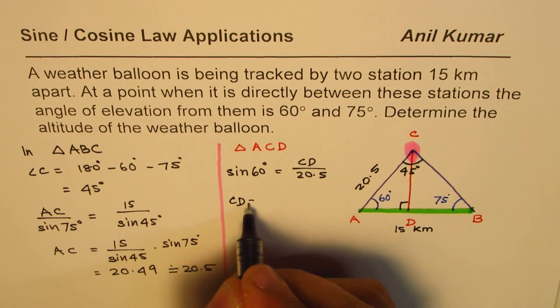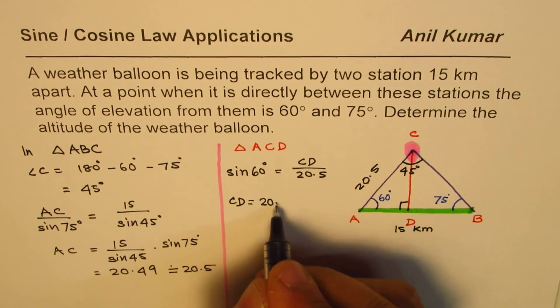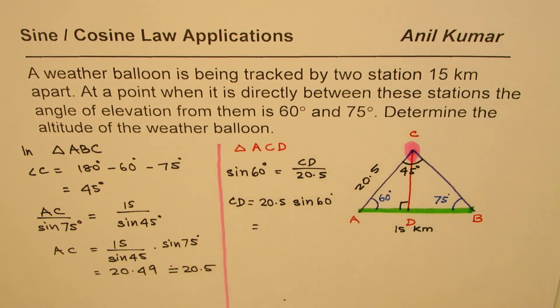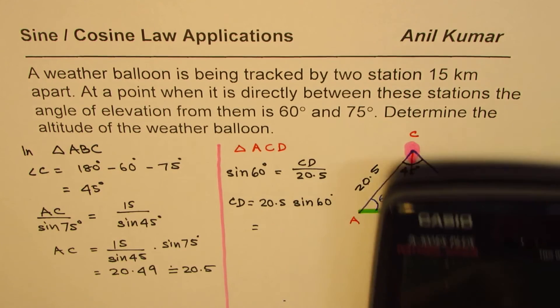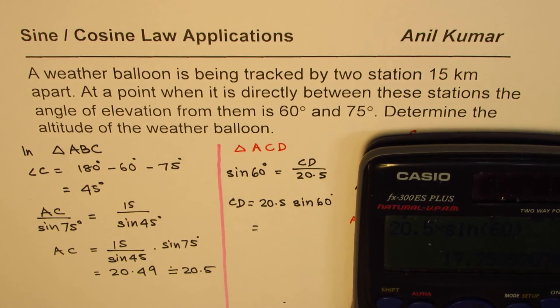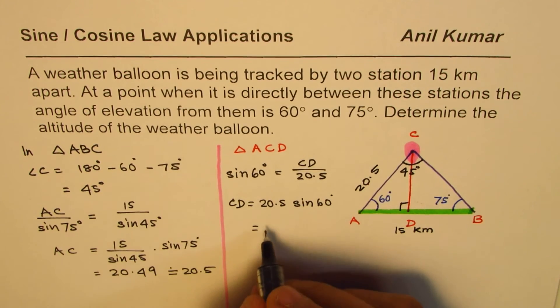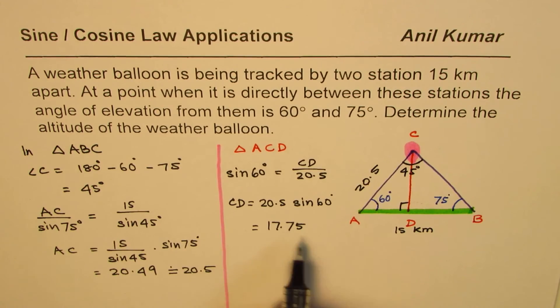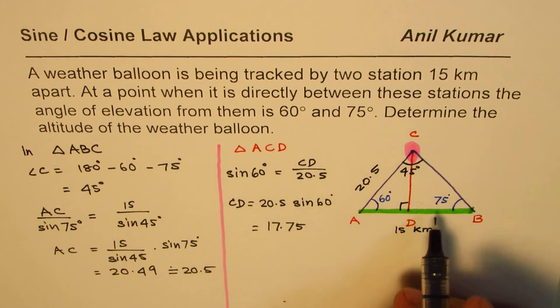So CD by rearranging this equation is equal to 20.5 times sine of 60 degrees. Let's use the calculator once again. So we have 20.5 times sine of 60 degrees. That is equal to in decimals 17.75. So we get 17.75.